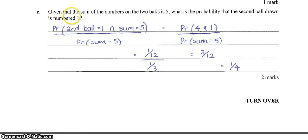Alright. Finally, given that the sum of the numbers on the two balls is 5, what's the probability that the second ball is a number 1? So the word given there tells you that we're looking at conditional probability here. So it's the probability that the second ball is a 1, given that the sum of the two balls is 5.